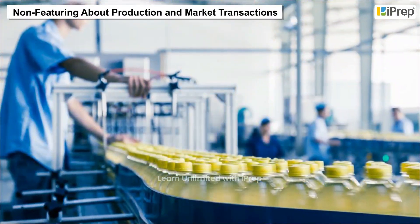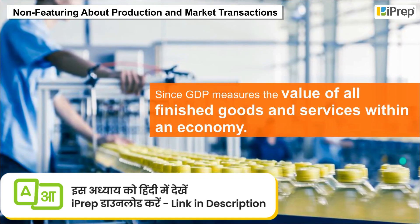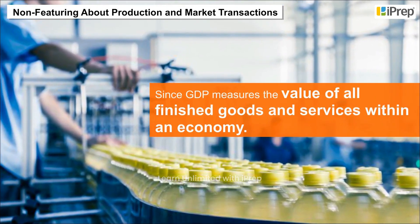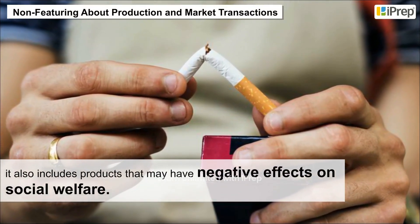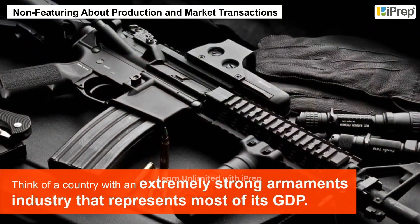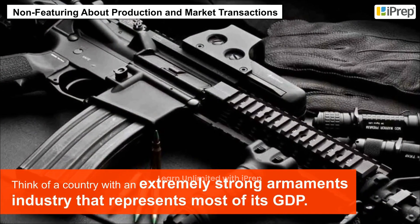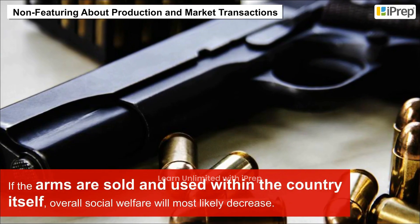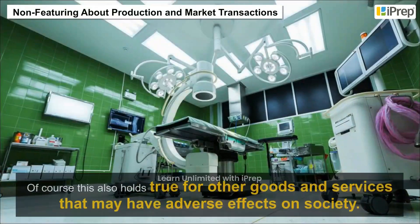Since GDP measures the value of all finished goods and services within an economy, it also includes products that may have negative effects on social welfare. Think of a country with an extremely strong armaments industry that represents most of its GDP. If the arms are sold and used within the country itself, overall welfare will most likely decrease.